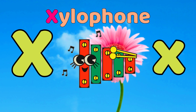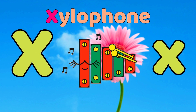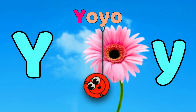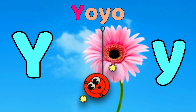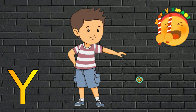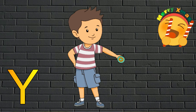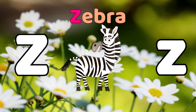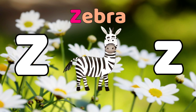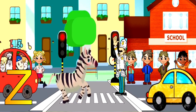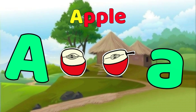X is for xylophone. X, xylophone. Y is for yo-yo. Y, yo-yo. Z is for zebra. Z, zebra. A is for Apple.